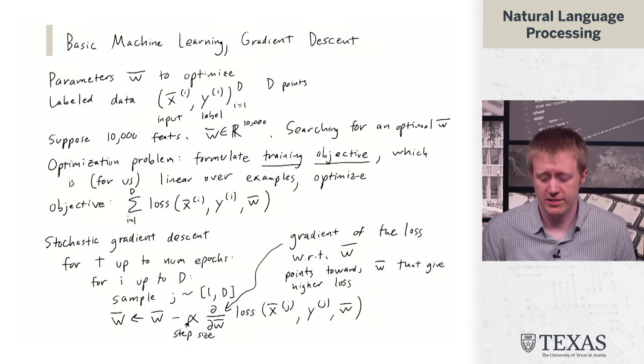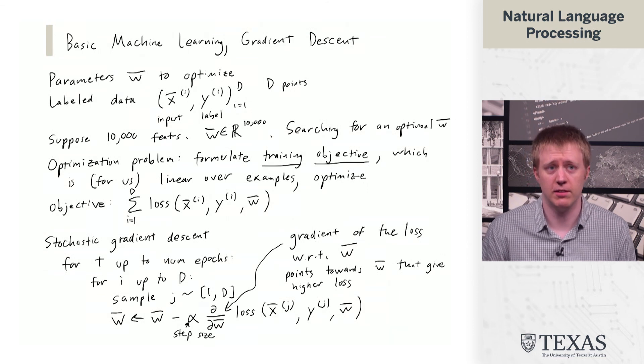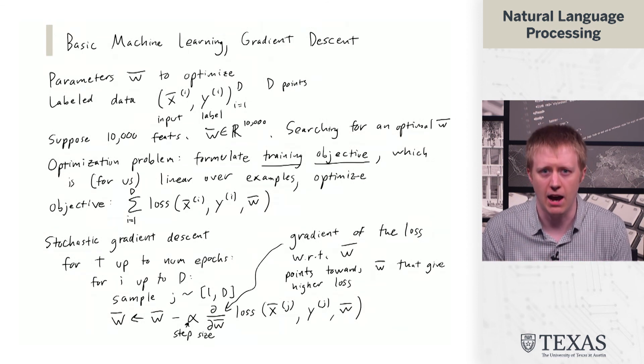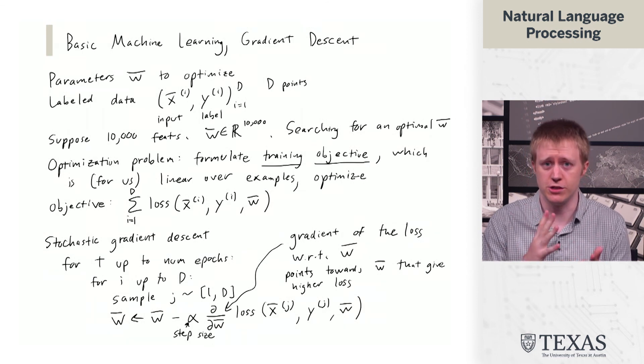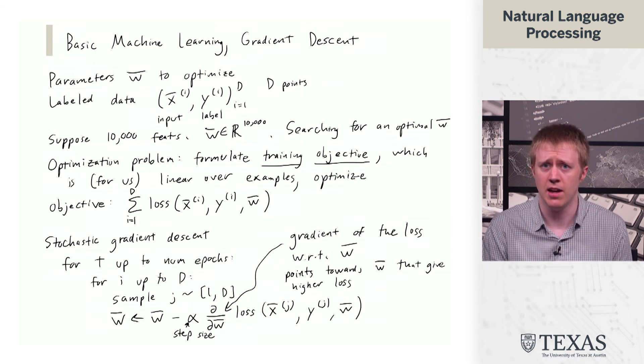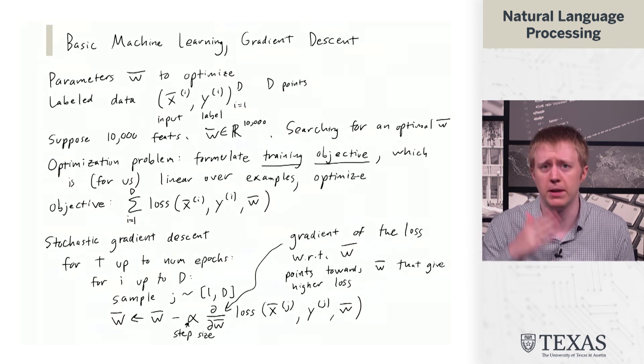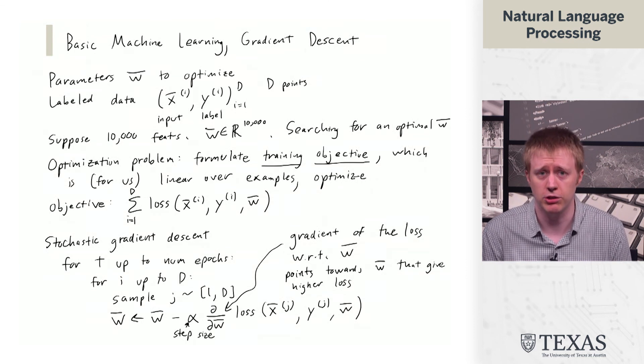And what this step size does is it allows us to kind of look at how far we want to move and adjust that accordingly. And so we'll be talking about the step size a little bit down the road when we actually talk more about implementing this. And then for deep neural networks, this step size parameter is fairly important.